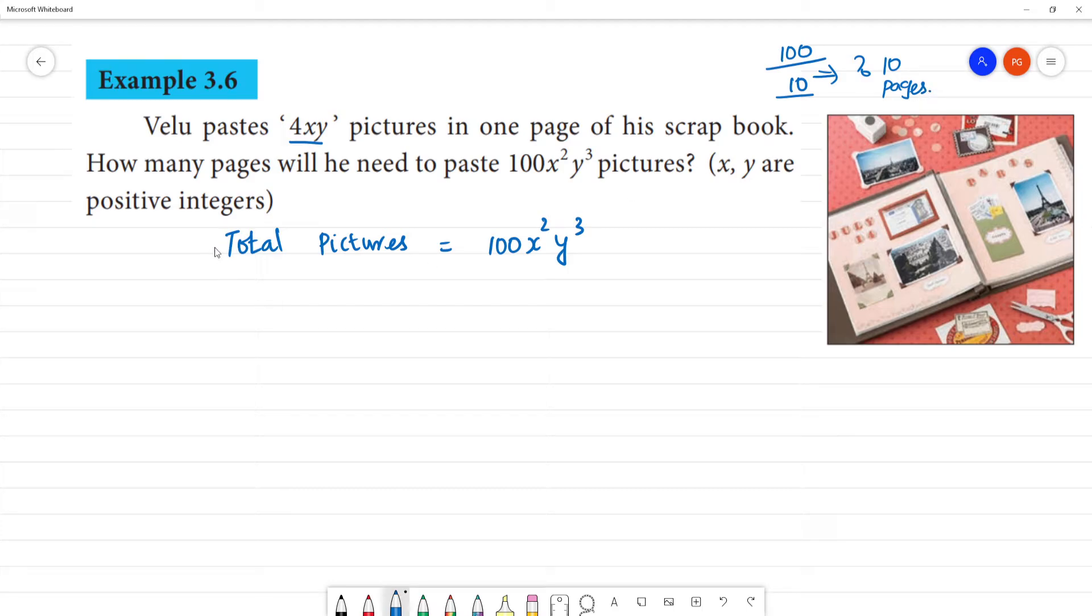That is simple. Total is equal to the pictures, xy. In one page, how many pictures did he paste? In one page we can paste 4xy pictures in one page.